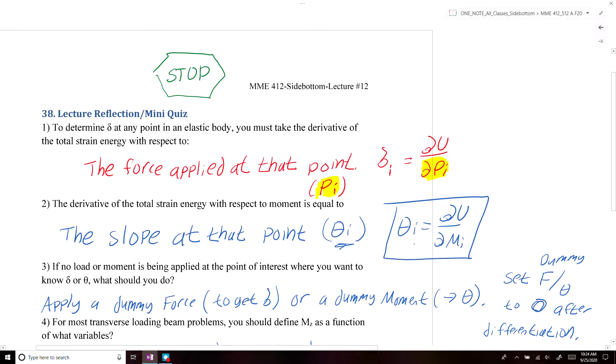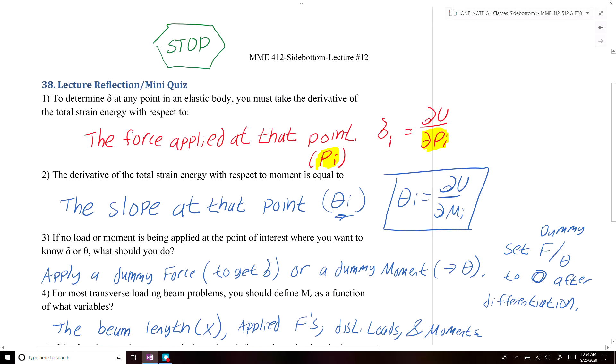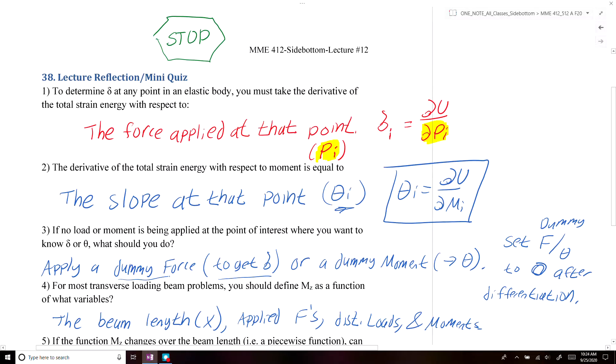Alright, if there's no load or moment being applied at the point of interest where you want to know theta, the displacement or the slope, what should you do? If you're looking to find the displacement, you should apply a dummy force, so it's a force that's magnitude is equal to zero. Or if you're looking for the slope, you should apply a dummy moment. After you apply these dummy forces and moments, you'll use these to create your moment as a function of x along the length of the beam. Then you can set your force or your moment equal to zero after you differentiate. Once you do your differentiation, you can set those terms equal to zero and solve the displacement at that point or the slope at that point.